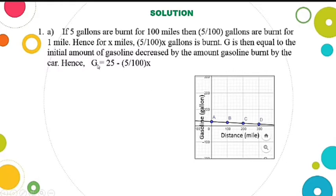Our equation now, because it decreases, we will use the minus operation. So g equals 25, our initial amount, minus how much was burned by the car. The burned gasoline. So g = 25 - (5/100)x.